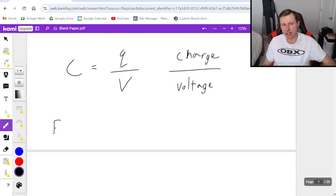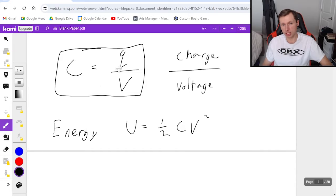And then the only other equation I have is the energy stored in a capacitor. The equation for that is U. I don't know why we choose U. But U equals one half C V squared. That's capital V voltage, not velocity. Although it does look kind of like the kinetic energy equation, one half MV squared.